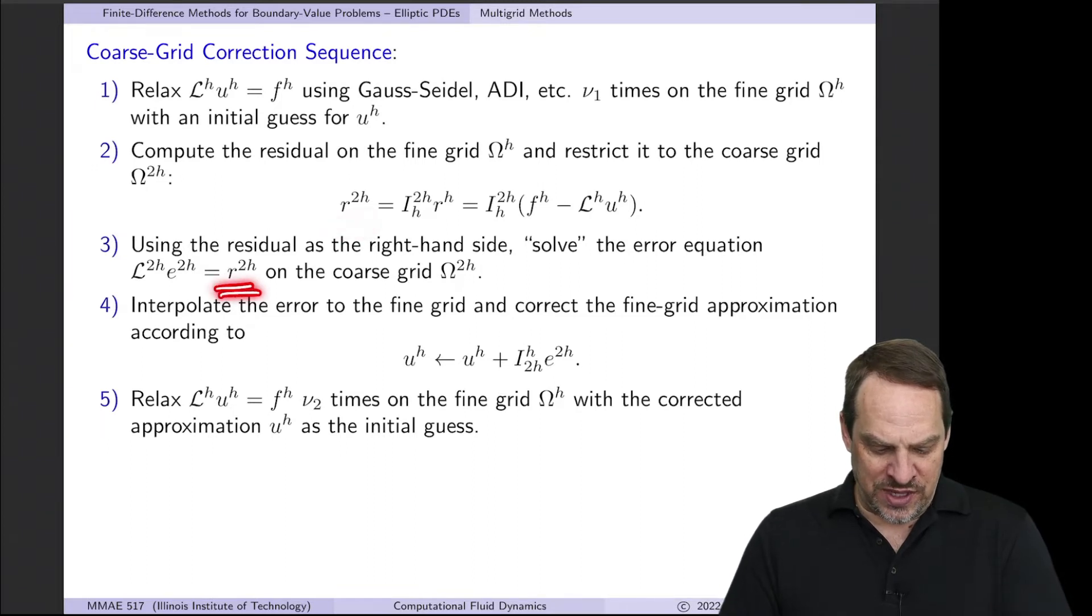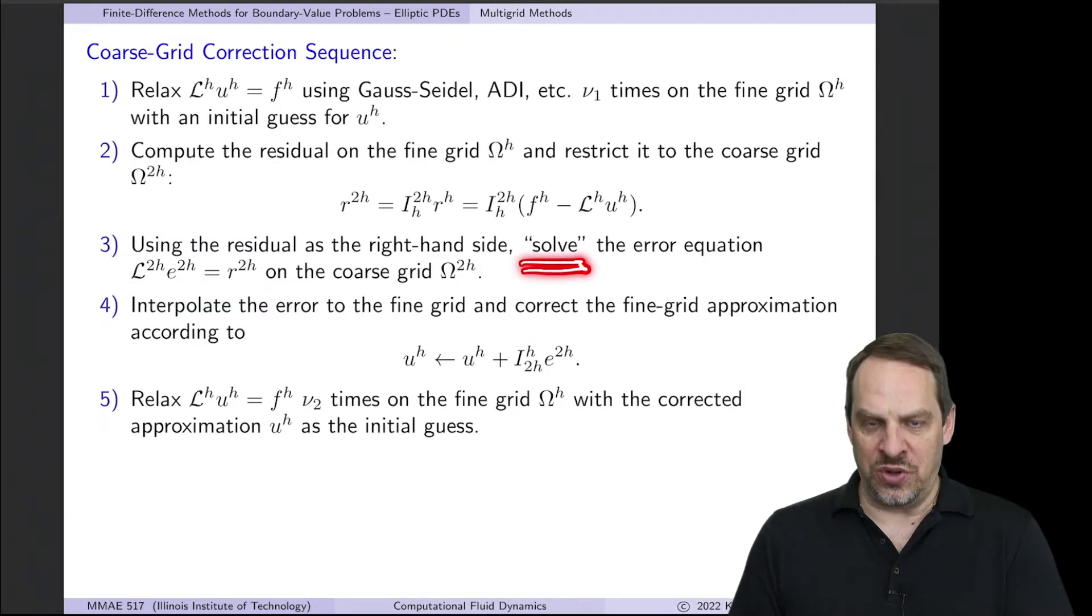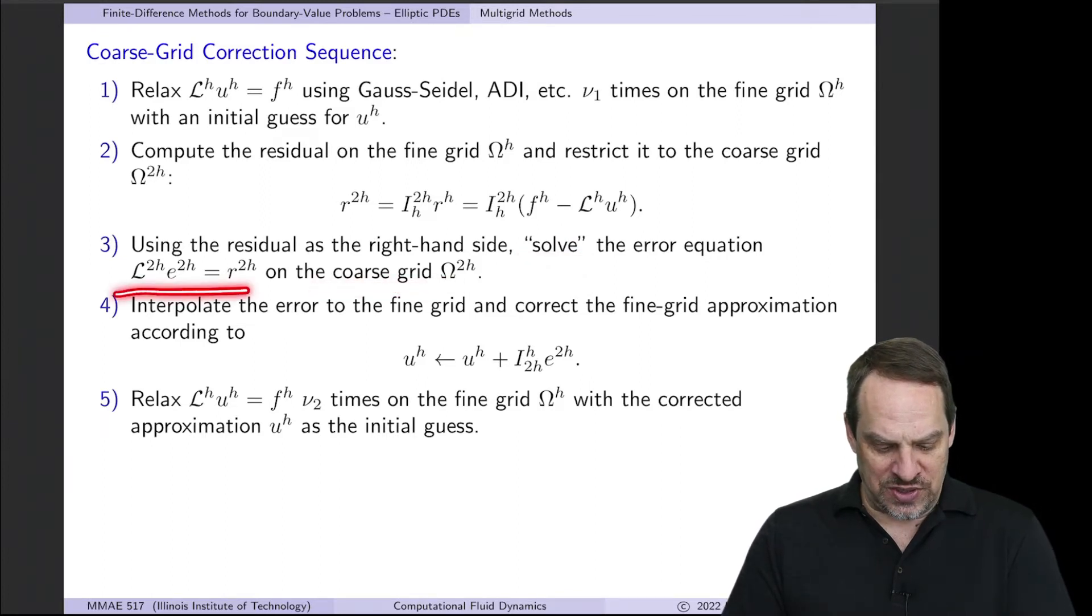Once we have that residual, that is the right hand side of our error equation, which we're then going to solve, put that in quotes for now because I'm not sure how I'm going to do that, that we're going to solve on the coarse grid. But again, notice that it's the error equation, Le=R, that we're solving on this coarser grid.